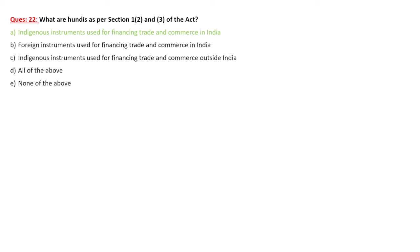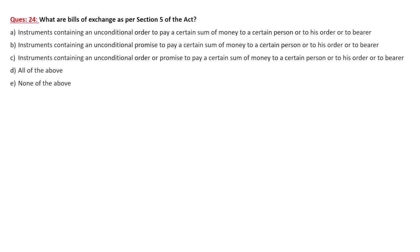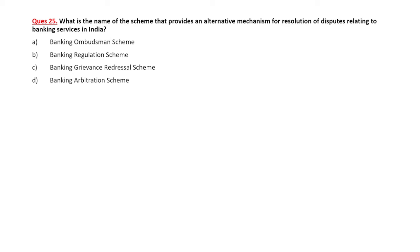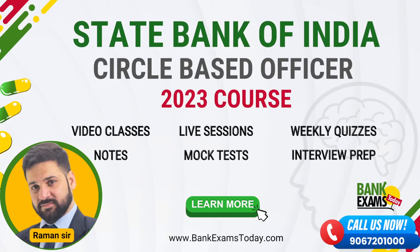What are hundis? Hundis are indigenous instruments — parchi — used for financing trade and commerce in India. What are promissory notes? Instruments containing an unconditional promise to pay a certain amount of money to a certain person, his order, or to the bearer. What are bills of exchange as per Section 5? Instruments containing an unconditional order to pay a certain sum of money to a certain person or his order. The Banking Ombudsman Scheme provides an alternative mechanism for resolution of disputes related to banking services in India — very important, it has appeared in previous exams.